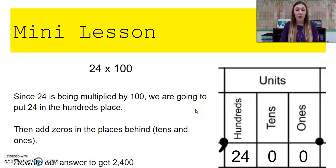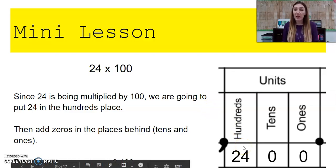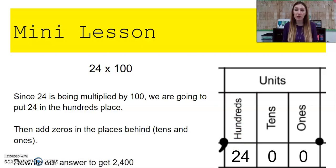Now let's try multiplying by 100. So we're going to do 24 times 100. Since 24 is being multiplied by 100, we're going to put 24 in the hundreds place. So when we were multiplying by 10, we put it in the tens place, but now we're multiplying by 100, so we're going to put that number in the hundreds place.